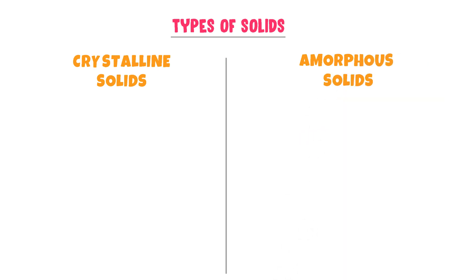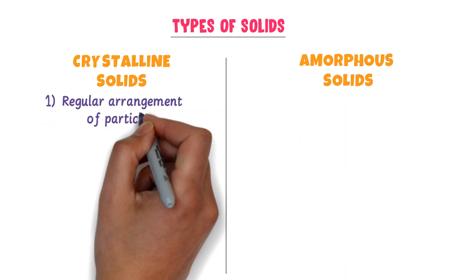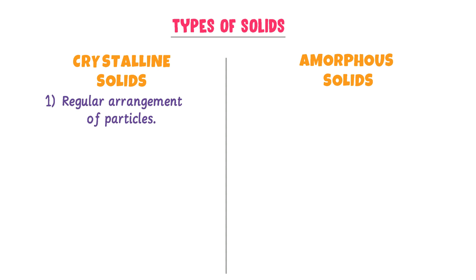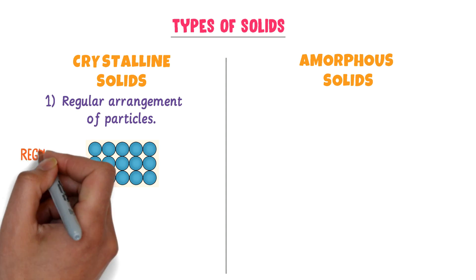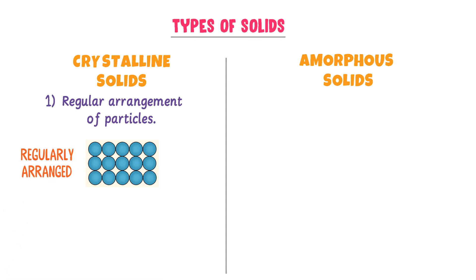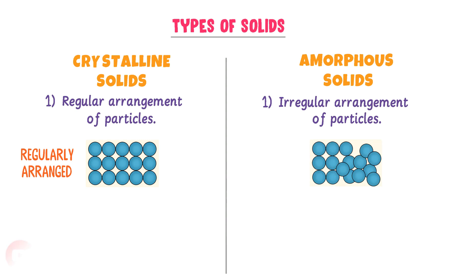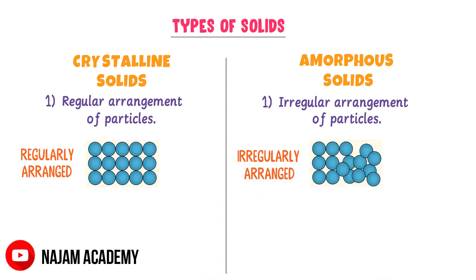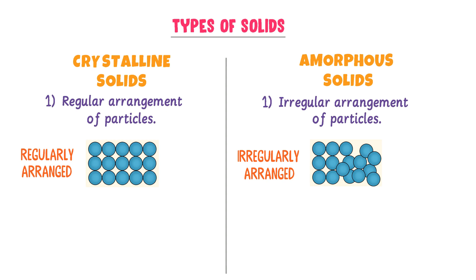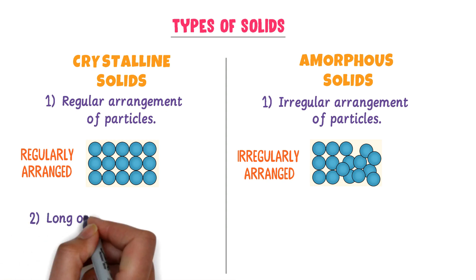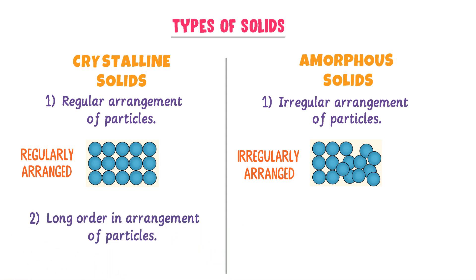In crystalline solids, there is regular arrangement of particles in space. All the particles in crystalline solids are regularly arranged in a three-dimensional way. While in amorphous solids, there is irregular arrangement of particles in space. Secondly, in crystalline solids, there is long-range order and arrangement of the particles.